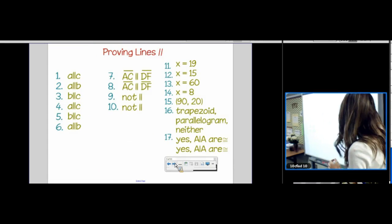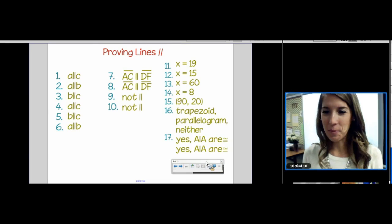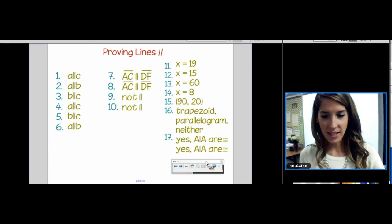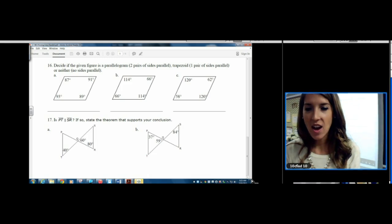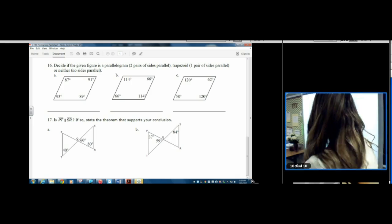Homework answers. The homework was called proving lines parallel. No, you didn't have to write a proof, but you did have to decide which lines are parallel. Seventeen on your homework said, Is PT parallel to SR? If so, state the theorem that supports your conclusion.